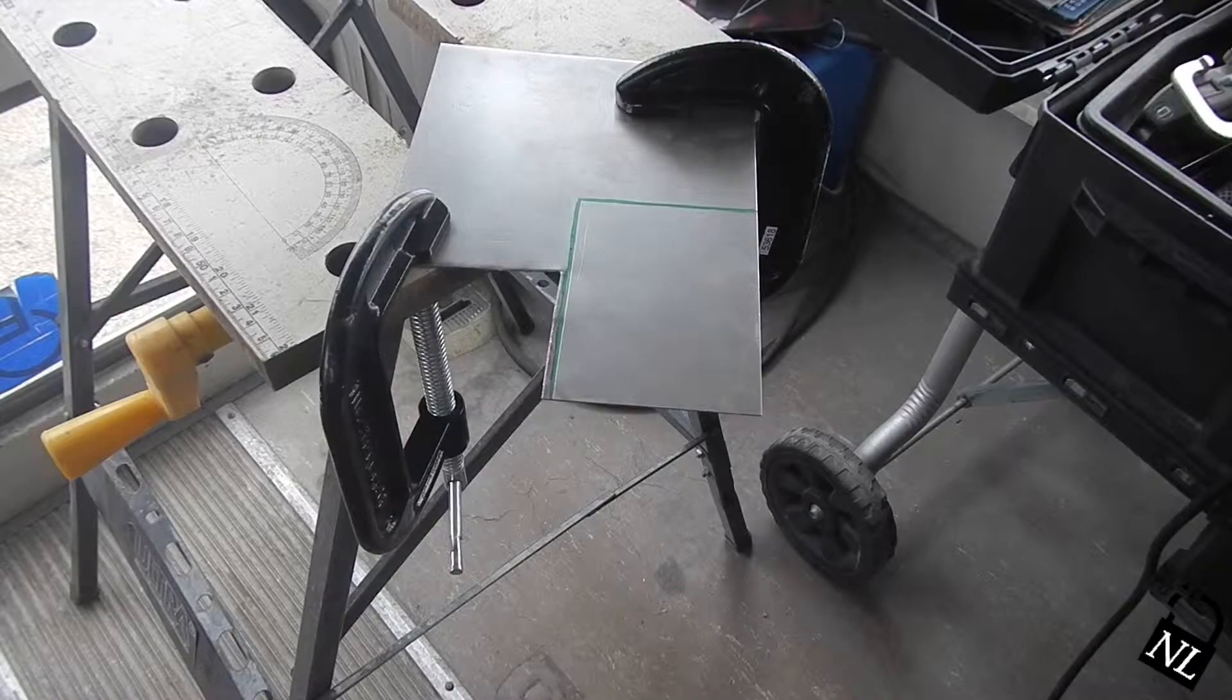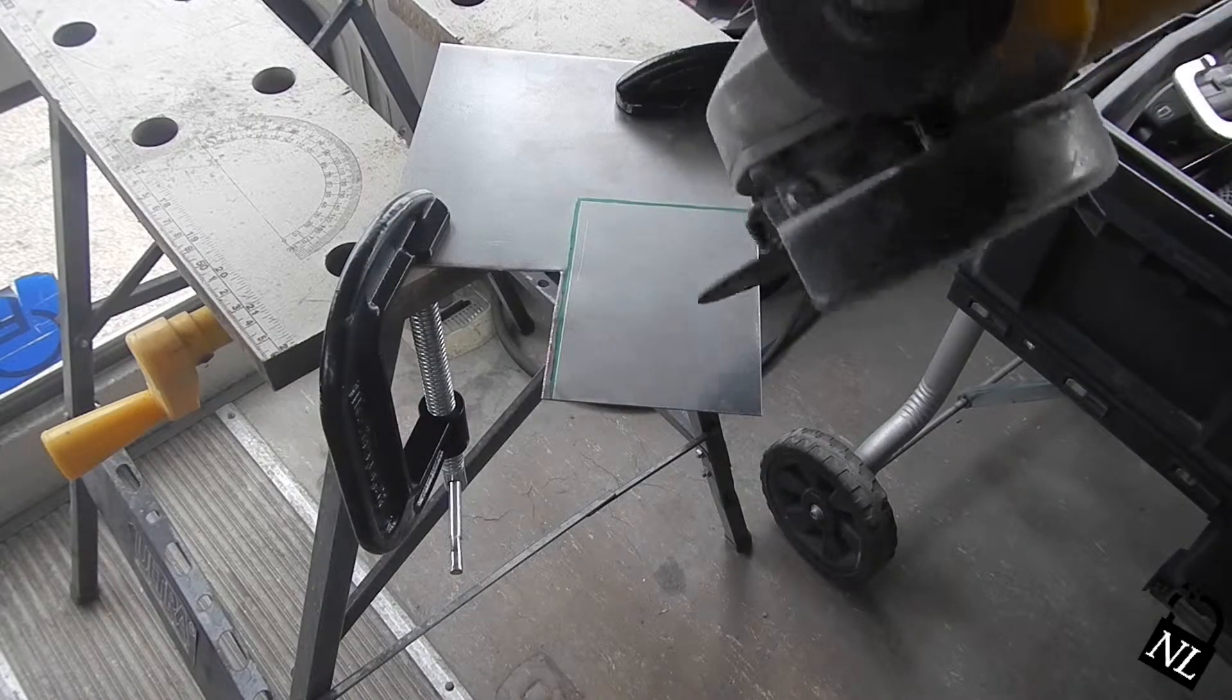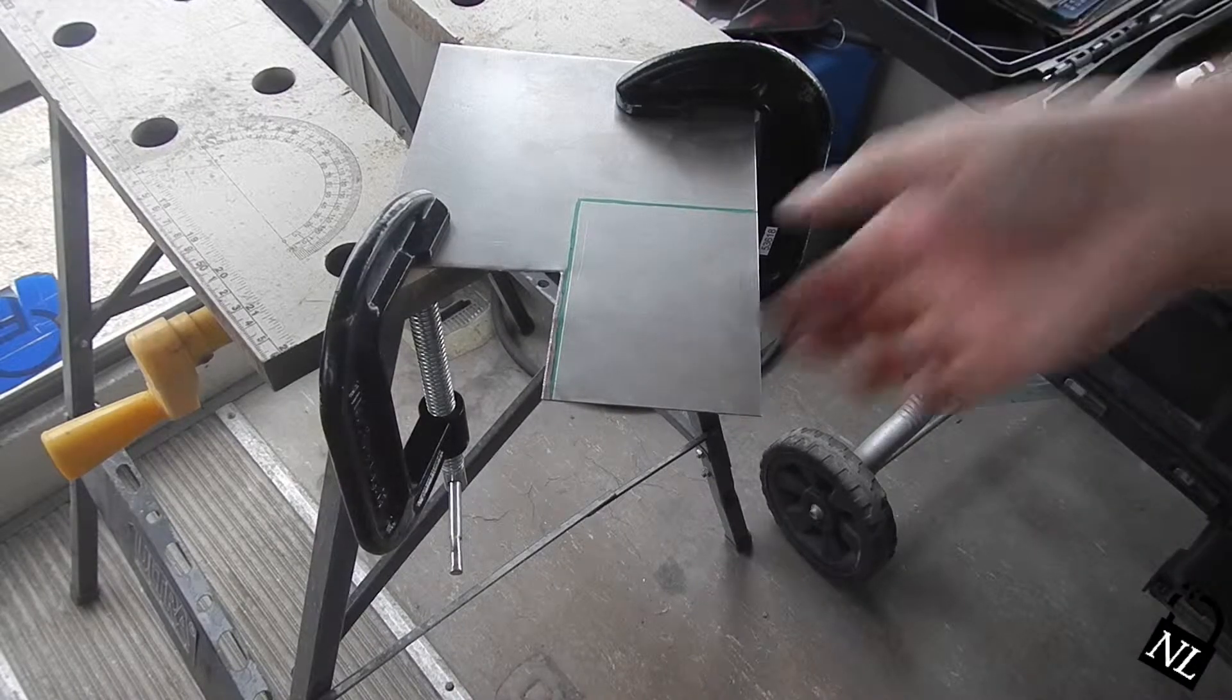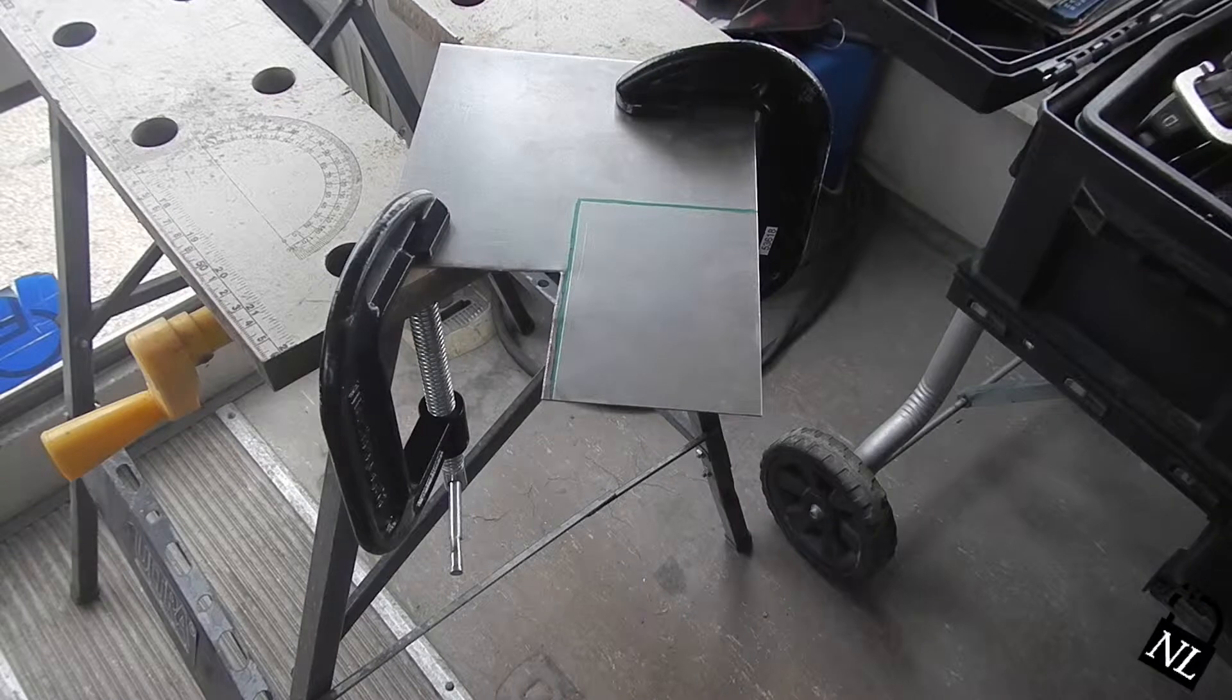To cut the piece out I'm going to be using an angle grinder with a cut-off wheel. You can also use a hacksaw. With metal this thin you can also just bend it until it breaks.